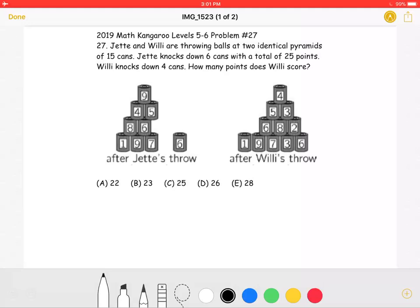Jet and Willie are throwing balls at two identical pyramids of 15 cans. Jet knocks down 6 cans with a total of 25 points. Willie knocks down 4 cans. How many points does Willie score?